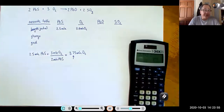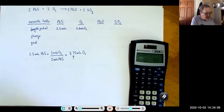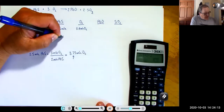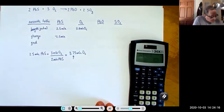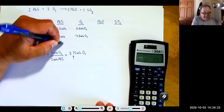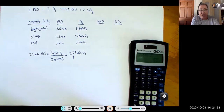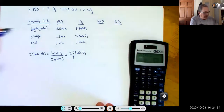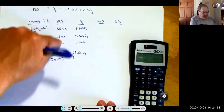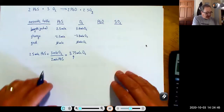This is the idealized perfect reaction where we have just the correct amount of lead 2 sulfide to react with just the correct amount of oxygen. If the reaction goes to completion, all of the lead 2 sulfide is gone, all the oxygen is gone, and we end with zero moles of each reactant.